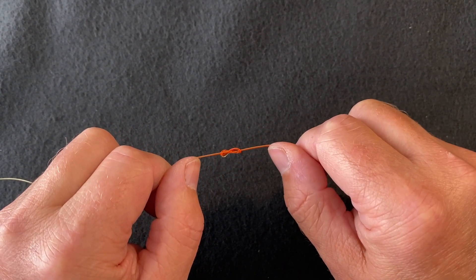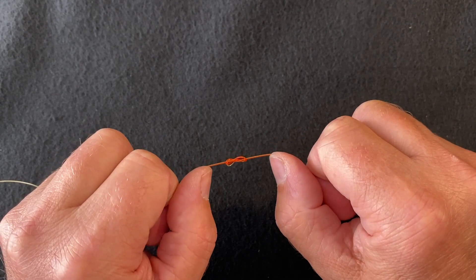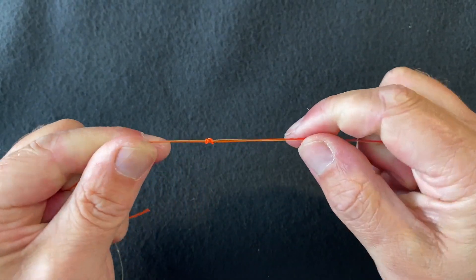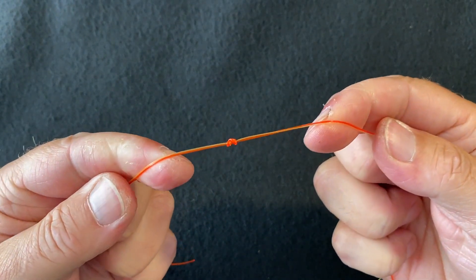Still holding on to both ends of the line on either side of the knot, pull your line tightly together to form your three-turn water knot.